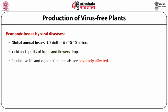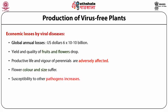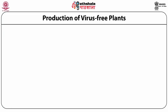The yield and quality of fruits and flowers drops. Productive life and vigor of perennial plants are adversely affected. Flower color and size also suffer. Viral infection also enhances the susceptibility of the plant to other pathogens. In the market, if people know that a plant is affected by virus, consumer acceptability also suffers. And the presence of virus sometimes also affects the rate of clonal propagation.